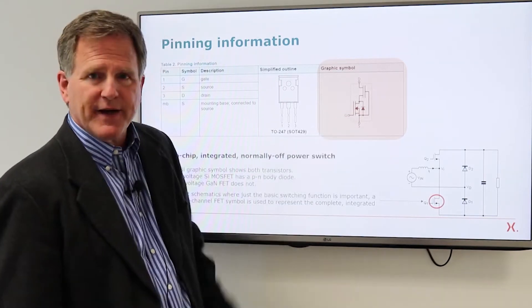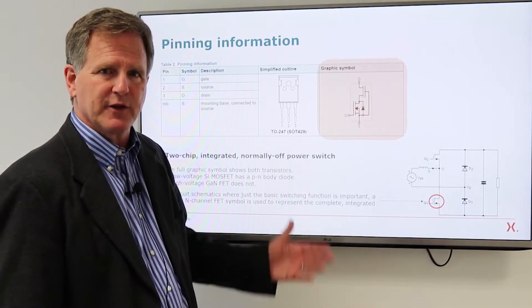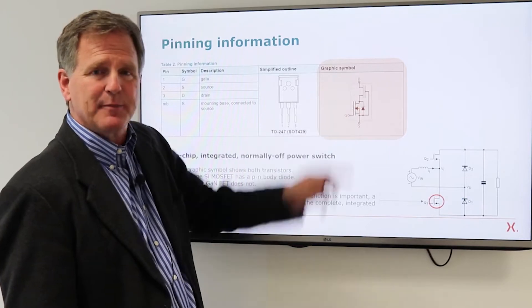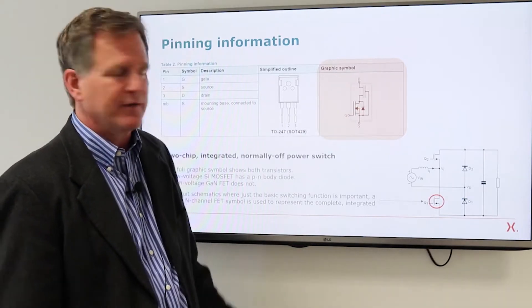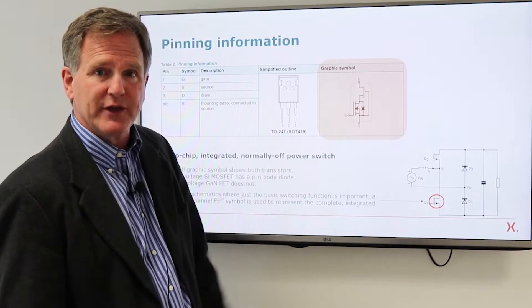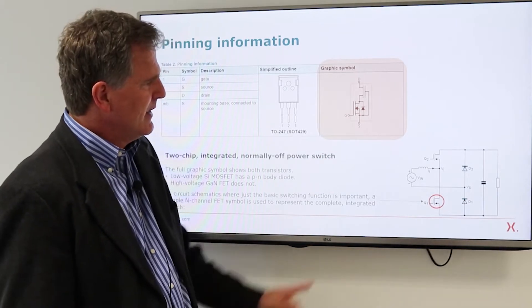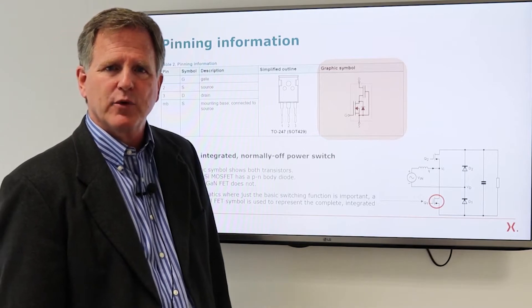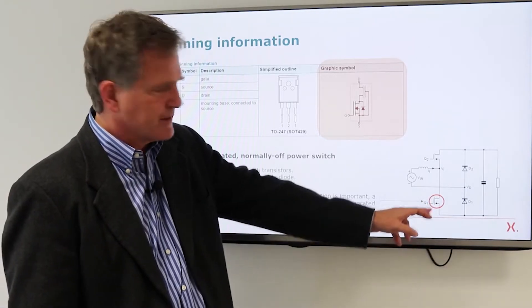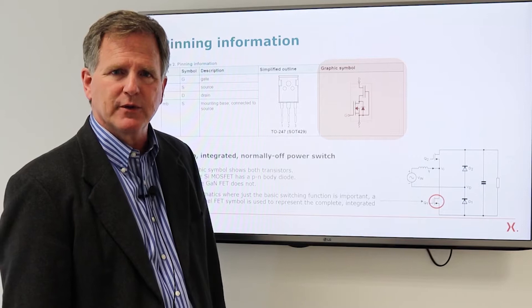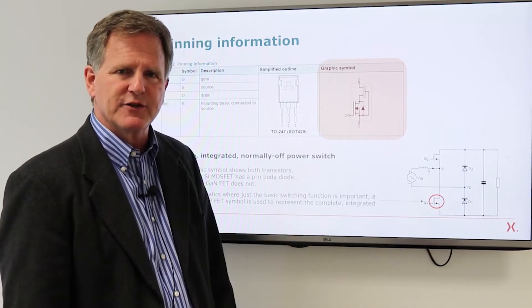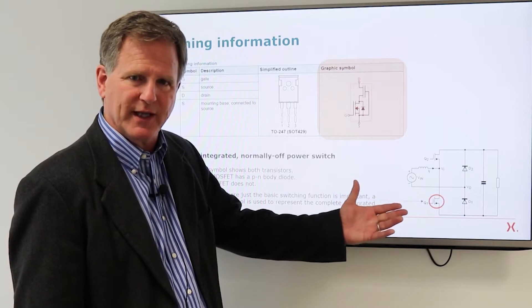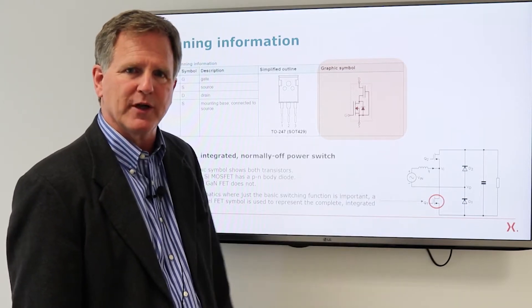The silicon device has a PN junction, as you expect, that behaves as a body diode. The GAN HEMT has no PN junction. The channel, the current only flows in the channel. In system level schematics where only the external functionality is important, we'll very often show this simplified symbol just to convey the idea of the external feature, the external functionality, an N channel normally off FET.